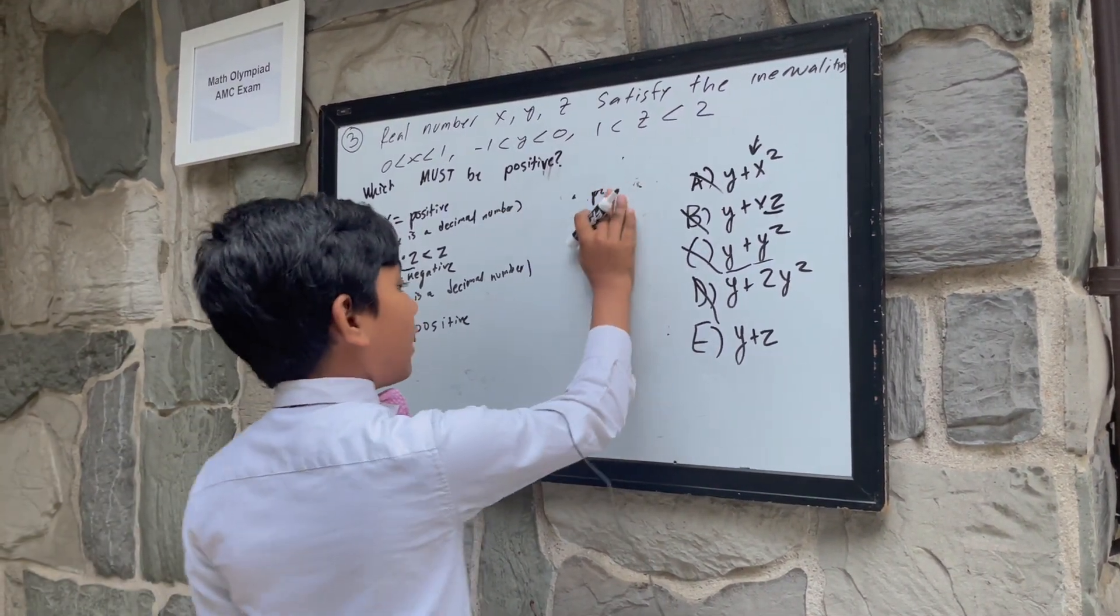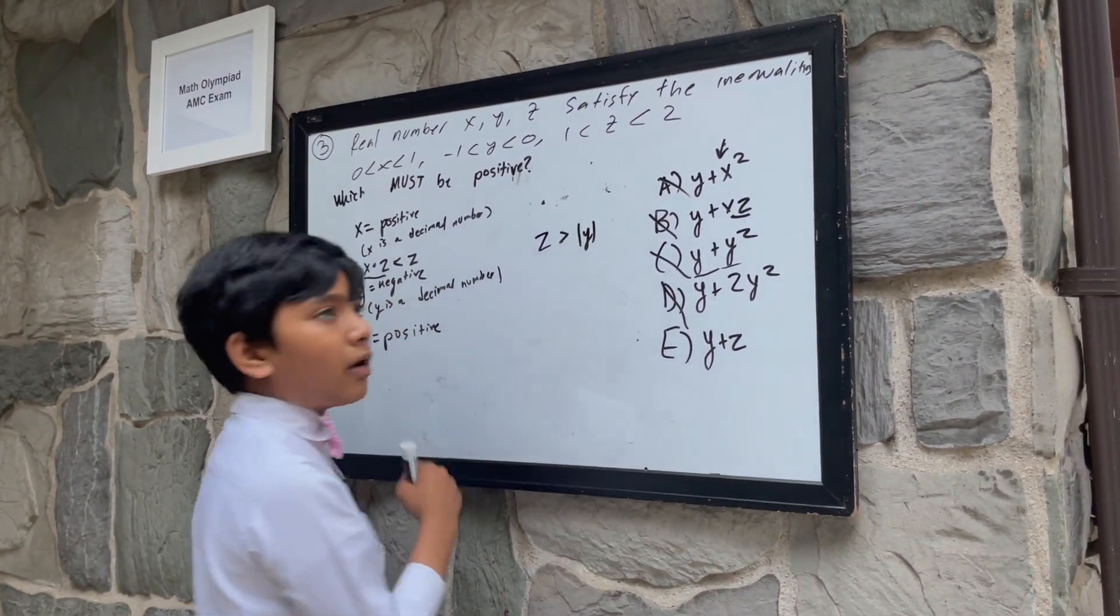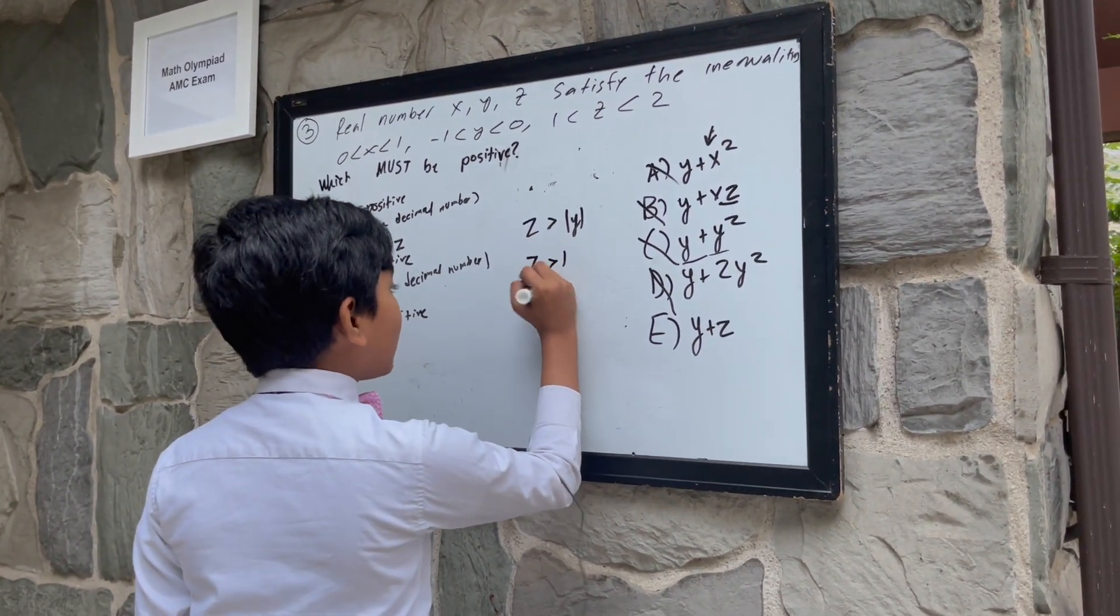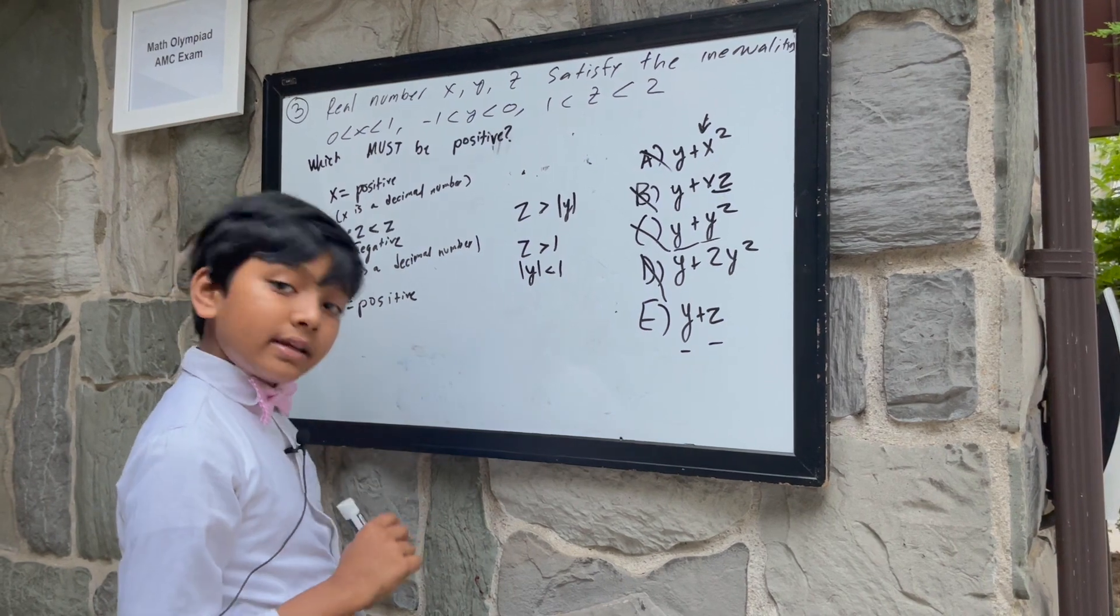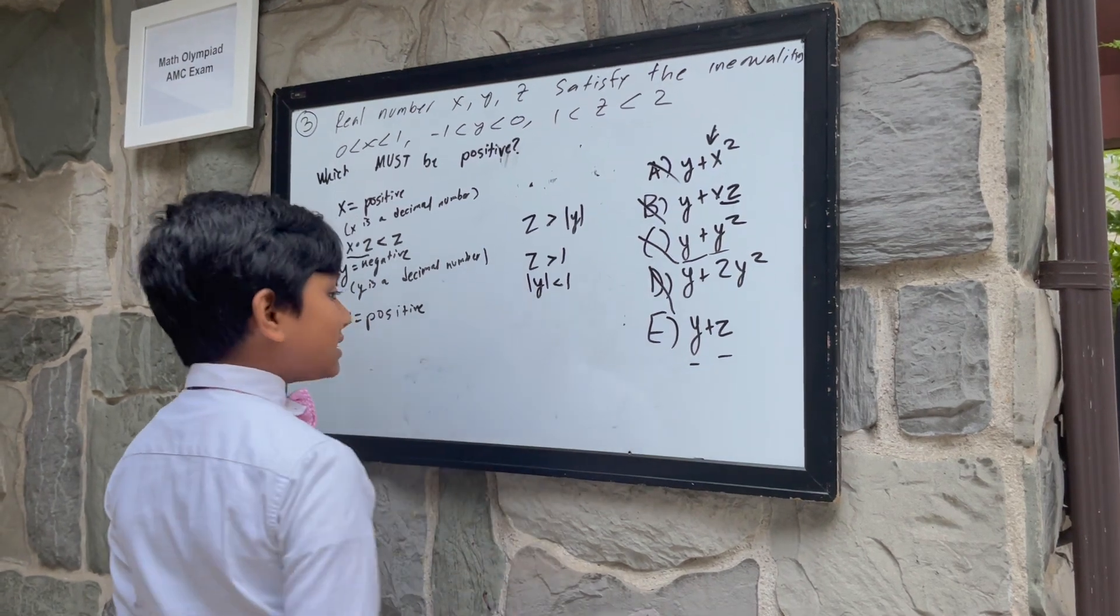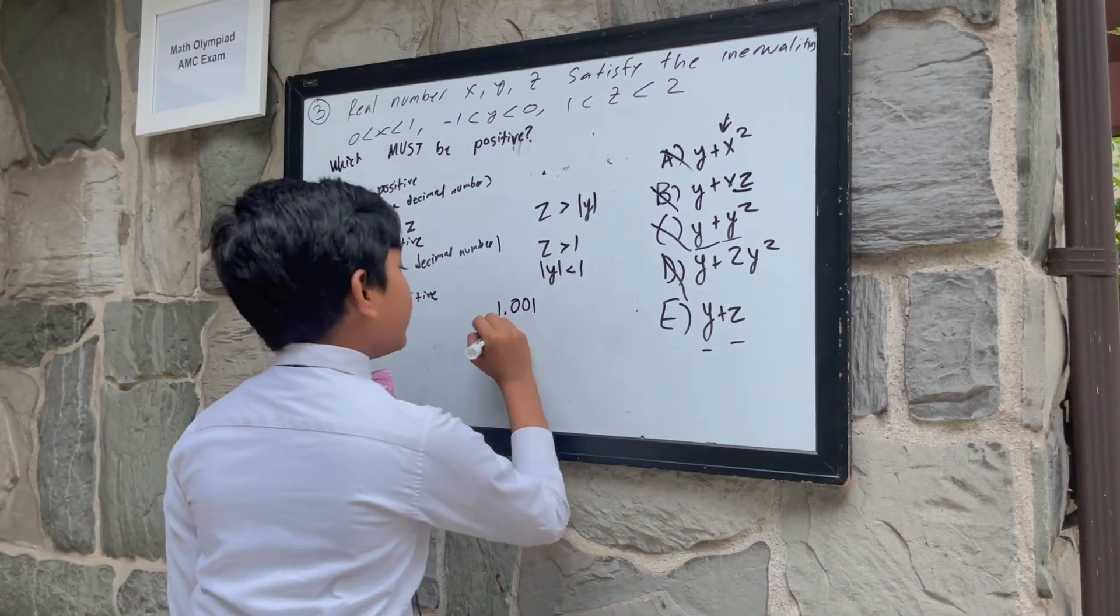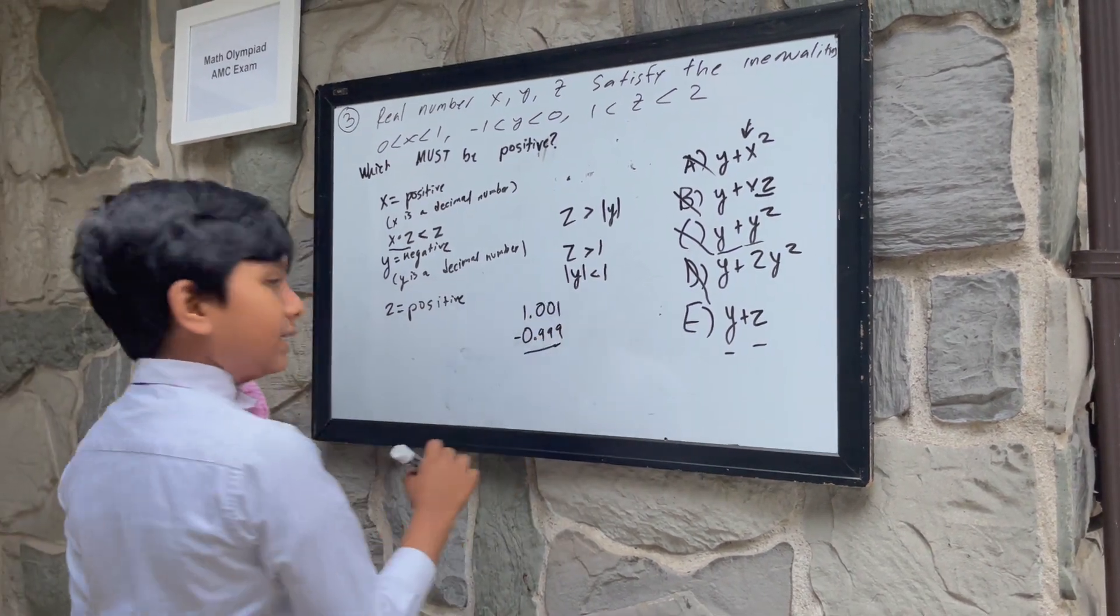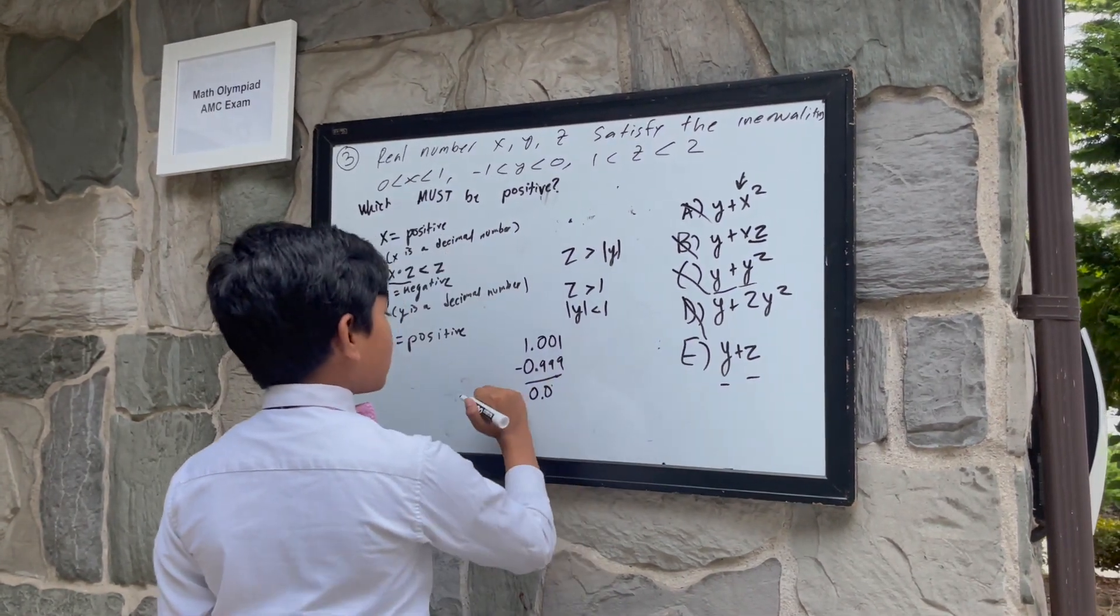What about the last one, y plus z? Well, z must be greater than the absolute value of y. That's a fact! Because z is greater than 1, while the absolute value of y is less than 1. That means y plus z must always give you a positive number. Like, for example, z has to be greater than 1, so let's say we have 1.001, and y being negative 0.999, because it can't go any lower than that. That still leaves a positive number as the outcome.